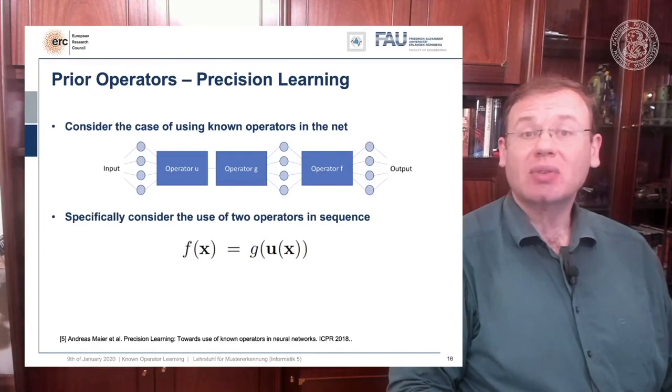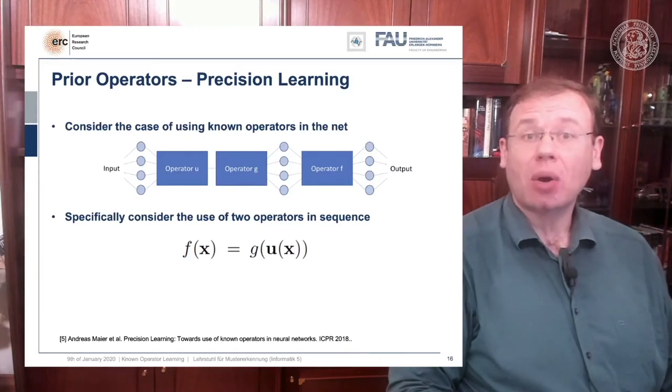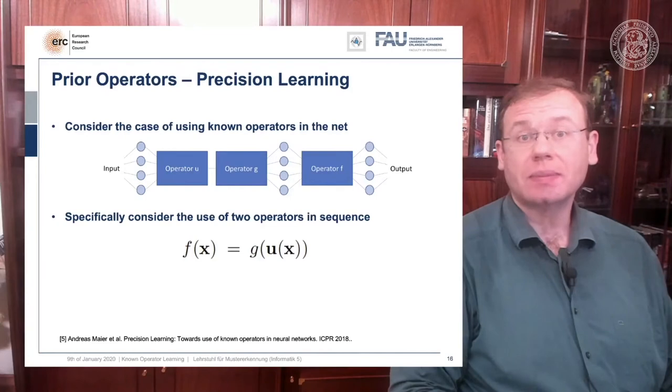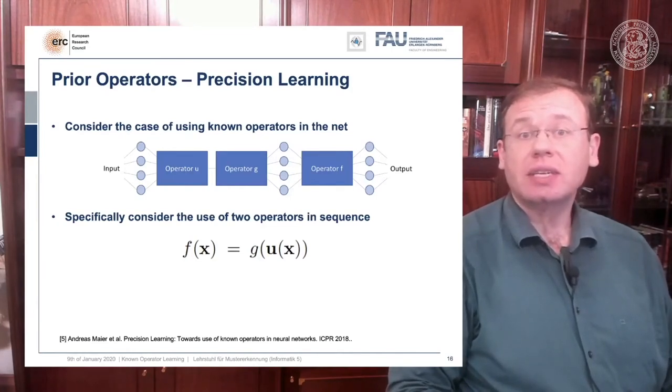And then we have some transform G, and G now takes the output of U and produces a scalar value, and this is then essentially the definition of f of X. So here we know that f of X is composed of two different functions. So this is already the first postulate here that we need in order to look into known operator learning.